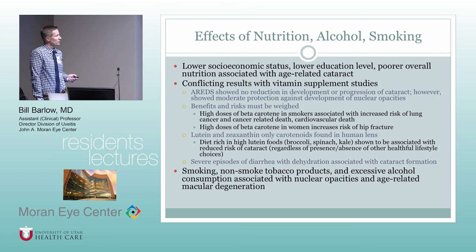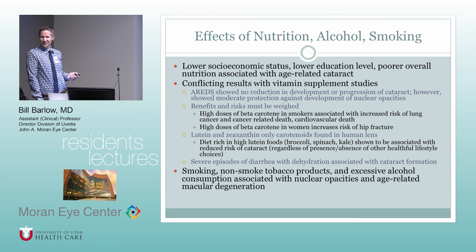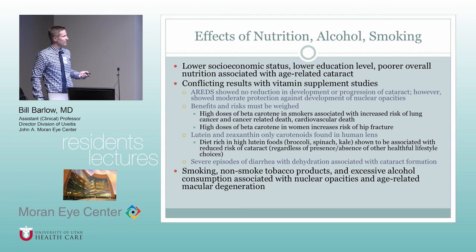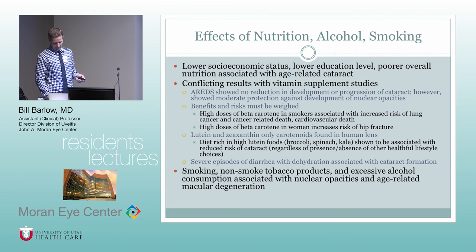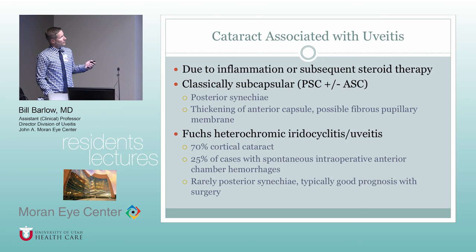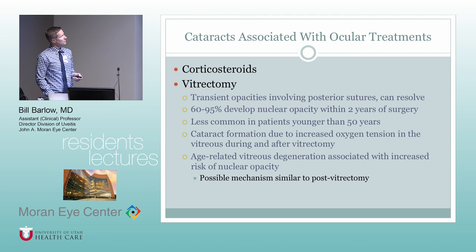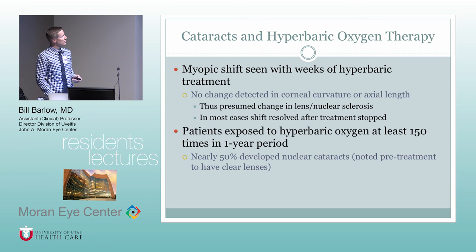Lutein and zeaxanthin are the only carotenoids found in the human lens — an interesting trivia point. Tobacco products and excessive alcohol consumption are associated with cataract formation and age-related macular degeneration; smoking is an independent risk factor for cataract development. Uveitis is classically associated with subcapsular cataracts. Corticosteroids and vitrectomy — and the oxidative mechanism behind it — have been discussed. Hyperbaric oxygen is also a contributing factor.